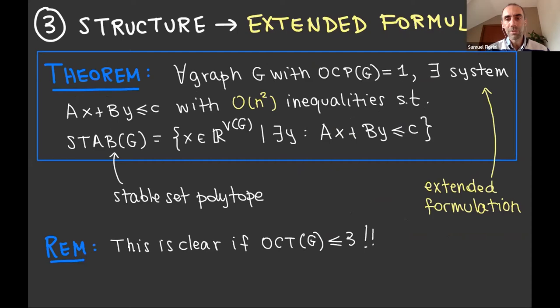So that's the main result. For every graph with OCP one, there is a system. Say X plus B Y at most C with the quadratic number of inequalities. So that the stable set polytope is described. As the set of all vectors X, so that there is a Y such that X plus B Y is at most C. In other words, if you take this system X plus B Y at most C and you project out the Y variables, you get a complete linear description of the stable set polytope in the original space.